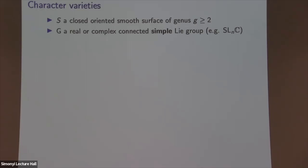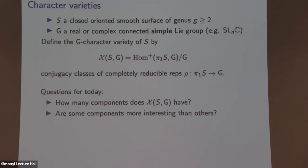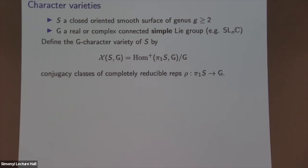The main object of interest is called the character variety of S, denoted X(S,G). It's a set of group homomorphisms from the fundamental group of my surface into my Lie group G, considered up to conjugation. There's a technical point where you need to look at some subsets to get a Hausdorff quotient, but that's not the most important aspect for today. It'll be denoted throughout the talk as X(S,G).